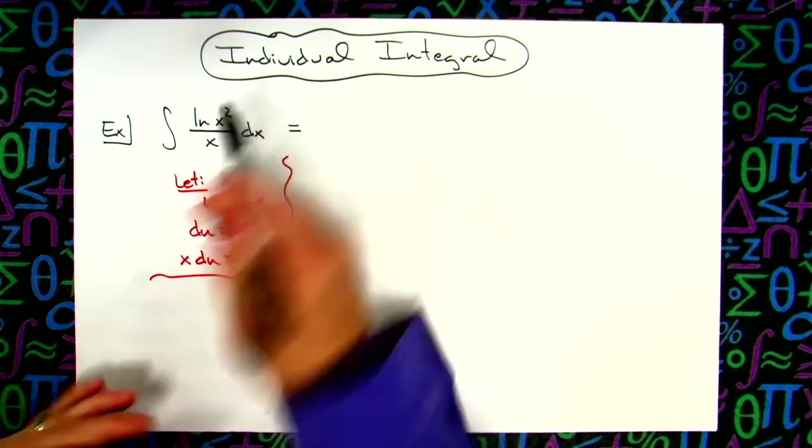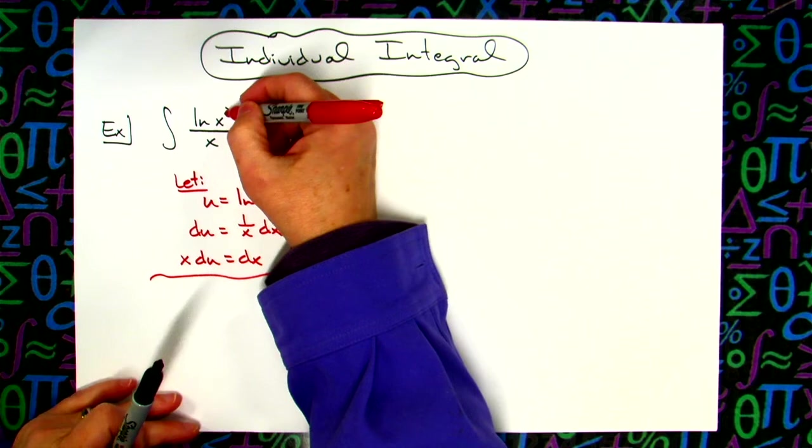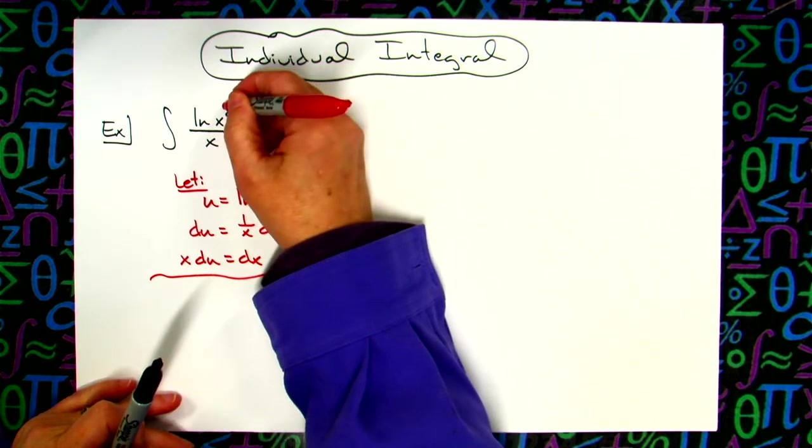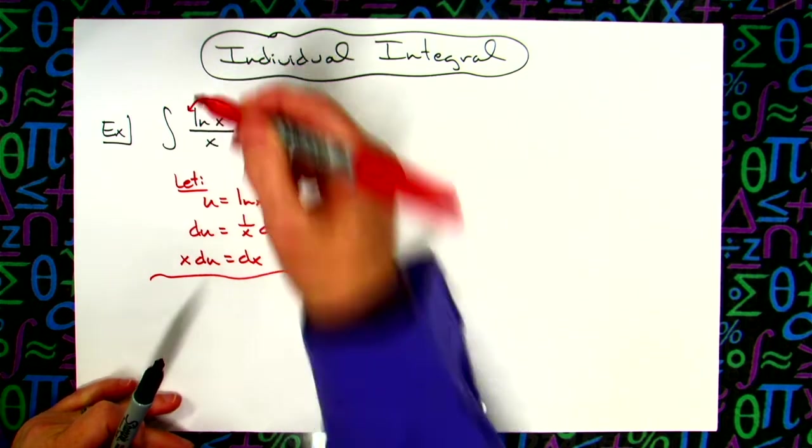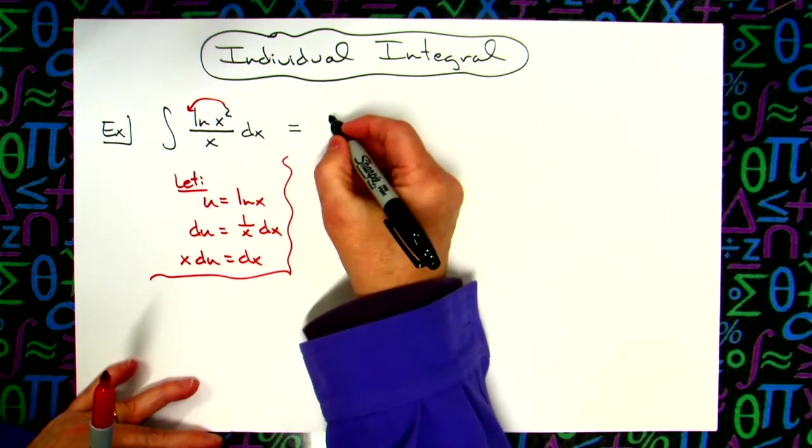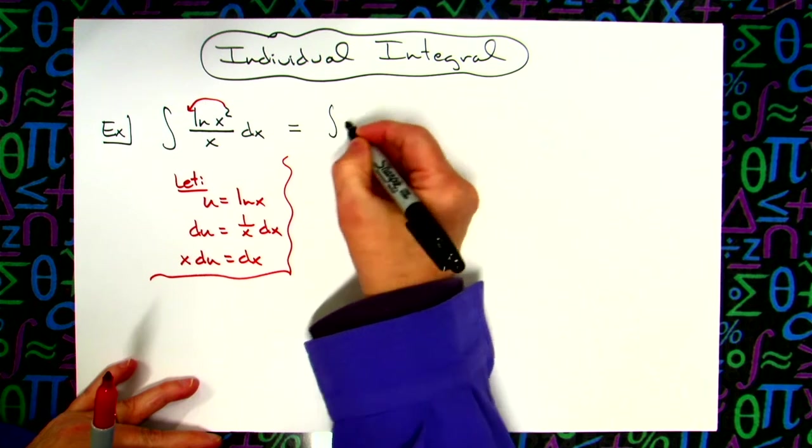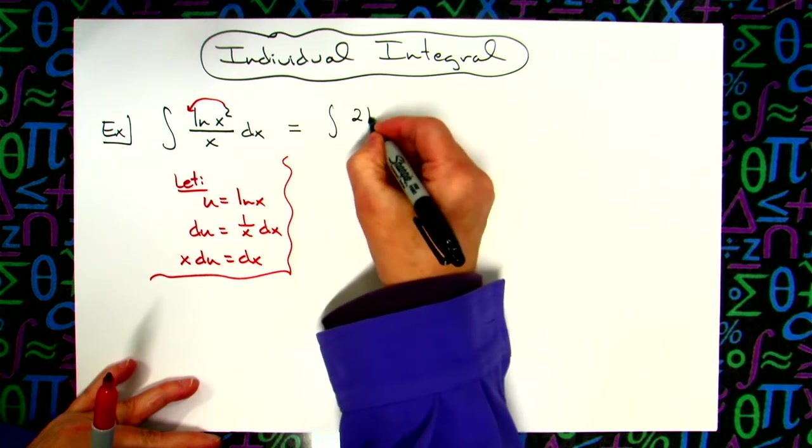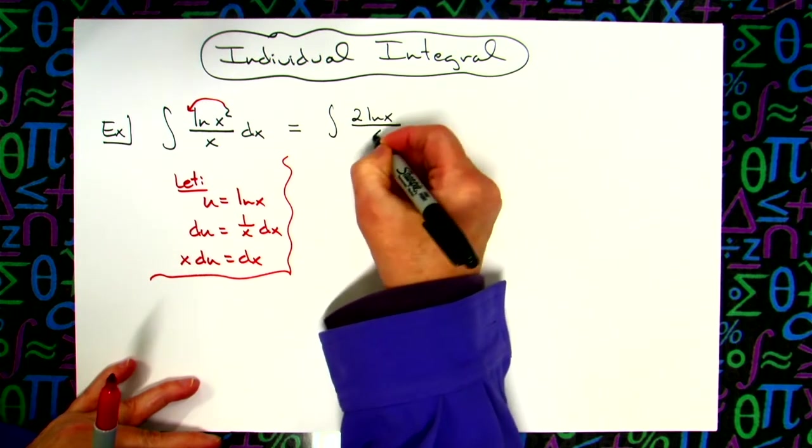But instead what I would like to do with this one is I would like to take this numerator and pull that 2 down in front. That's a property of logarithms that we're allowed to do. By doing that I'll have the integral of 2 natural log of x all over x dx.